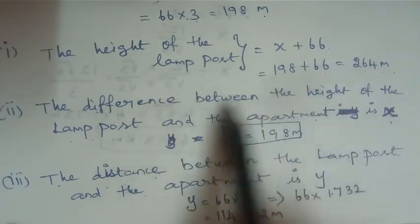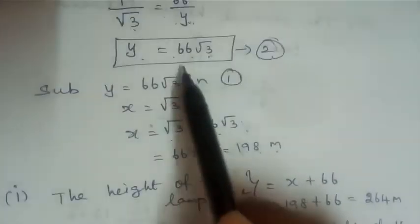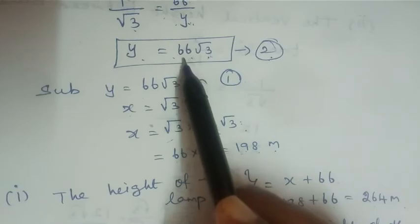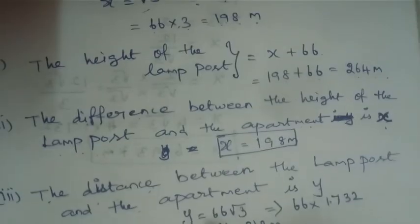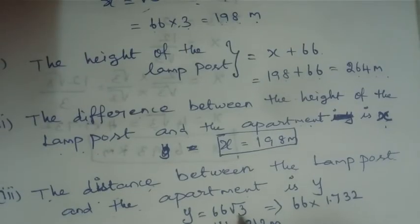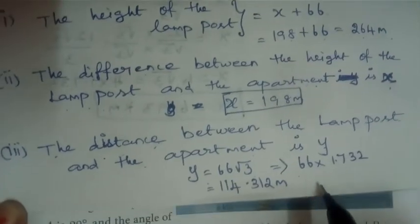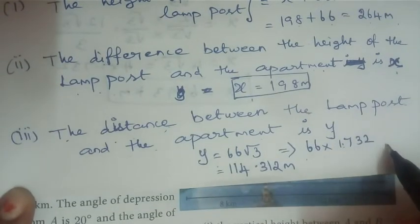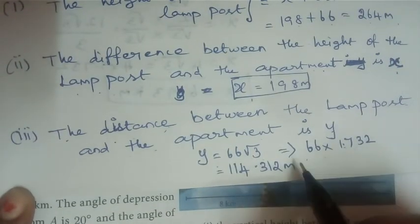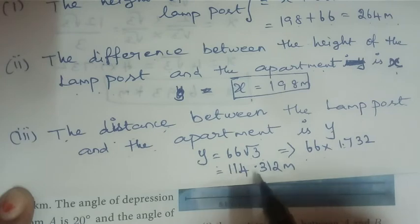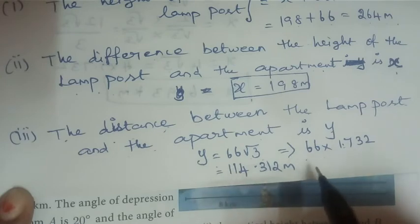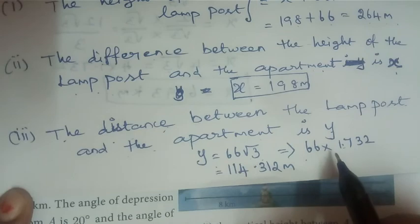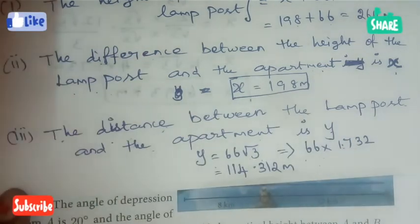The distance y = 66√3. Using √3 ≈ 1.732, we get 66 × 1.732 ≈ 114 meters. This is the answer to the 5th sum, and the solution is complete. Please like, share, and subscribe — thank you!